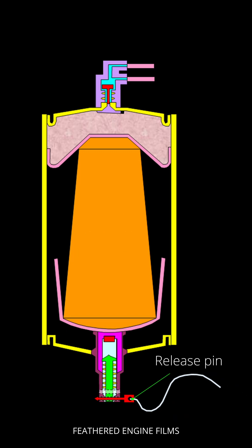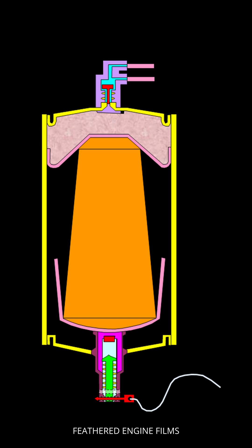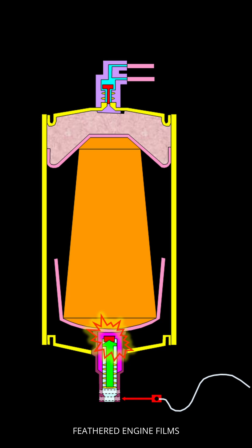Each generator has a release pin which holds the firing pin in position. When you pull that mask towards you, it's not just to get the mask over your face — you're pulling the lanyard and pulling out that release pin, which allows the firing pin to shoot across and hit a thing called a primer, which starts the chemical reaction in the generator.